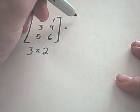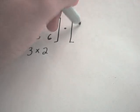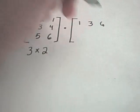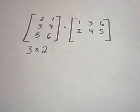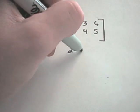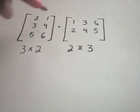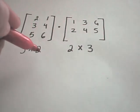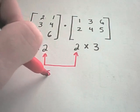And suppose I want to multiply it by the following: 1, 3, 6, 2, 4, 5. So now my second matrix is a 2 by 3 matrix. It has 2 rows and 3 columns. In order to be able to multiply matrices, the number of columns in your first matrix has to be equal to the number of rows in your second matrix. So basically the numbers on the inside must be the same value.